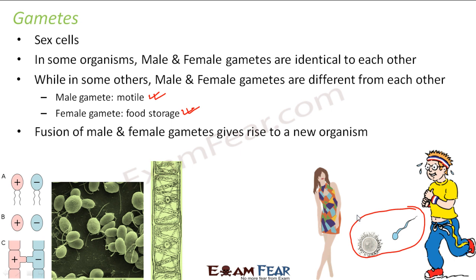Now that we have got the basic idea about sexual reproduction and what happens in it roughly, we will study how these gametes are produced in different organisms - how a male gamete is produced inside a human male, how a female gamete is produced inside a human female. We will also talk about sexual reproduction in plants - what is a male gamete in a plant, what is a female gamete in a plant, and how they are produced. These are the topics we are going to discuss in detail now.